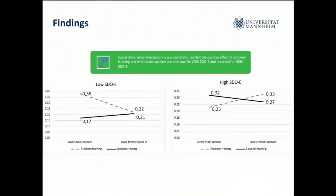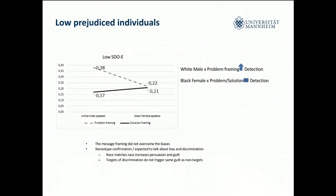Most of our hypotheses were confirmed, except for the Black woman and message framing. As you can see, there is a reverse effect for low-prejudiced versus high-prejudiced individuals. As expected, the white male speaker using problem framing was the most effective in detecting potential bias. However, it was not successful for the Black woman. It doesn't matter if she uses the problem framing or the solution framing — she still gets backlash for talking about discrimination. This can tell us something about tone policing of Black women.